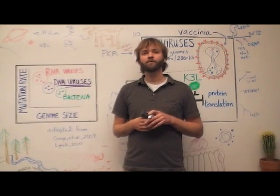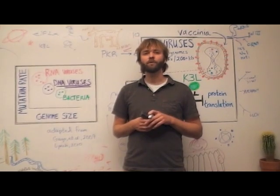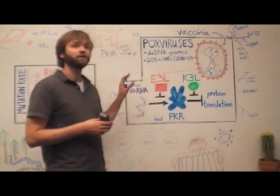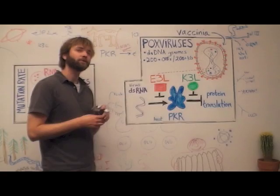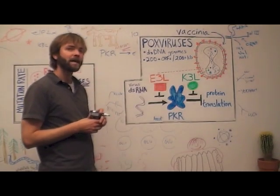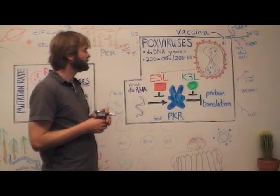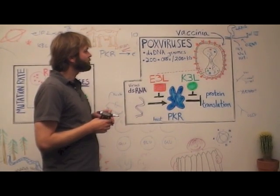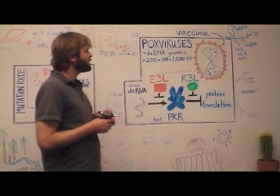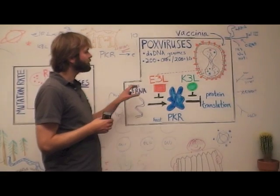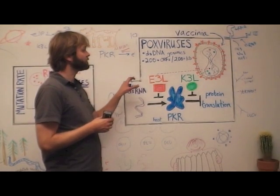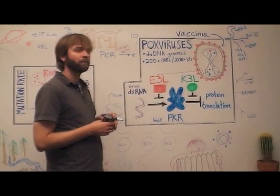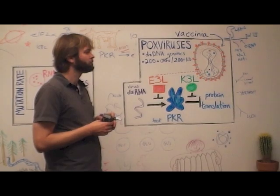To address this fundamental question, we turned to vaccinia virus, the model pox virus, to experimentally determine how it might adapt to host immunity. We took advantage of the fact that a lot is known about vaccinia biology, including viral proteins that counteract protein kinase R, an important component of innate immunity.